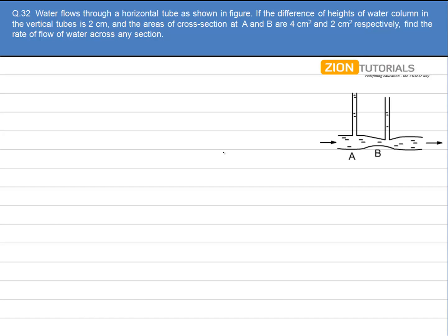Water flows through a horizontal tube as shown in the figure. If the difference of heights of water column in the two vertical tubes is 2 cm, and the areas of cross section at A and B are 4 cm² and 2 cm² respectively, find the rate of flow of water across any section.